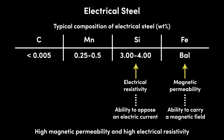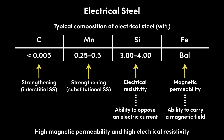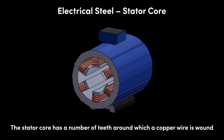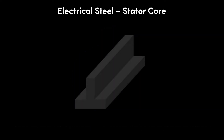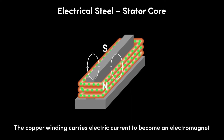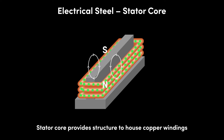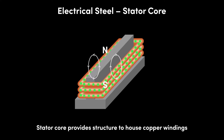As is the case for almost all types of steel, carbon is present for interstitial solid solution strengthening, while manganese is present for substitutional solid solution strengthening. The stator core has a number of teeth around which a copper wire is wound. The copper wire, or winding, carries electric current to become an electromagnet. The first purpose of the stator core is to provide a structure on which the copper windings can be housed, needing some degree of strength and stiffness to carry the load. The small carbon and manganese additions provide the strength to help with this, as does the sizeable silicon addition which contributes to substitutional solid solution strengthening.